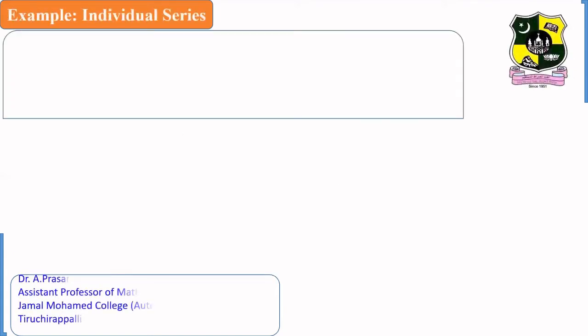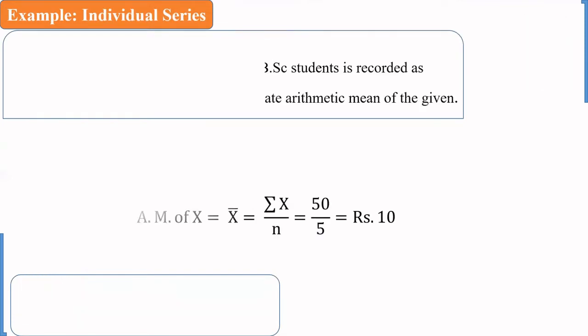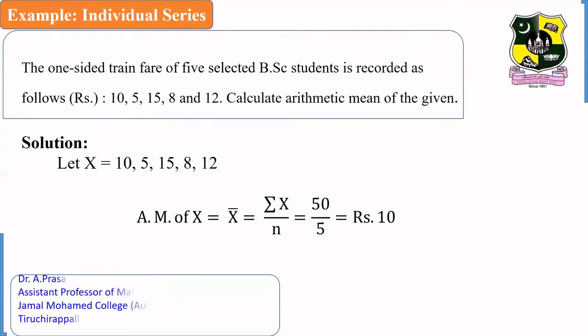I shall explain how to calculate the arithmetic mean for individual series. Here, the one-sided train fare of five selected B.Sc students is recorded as follows in rupees: 10, 5, 15, 8, and 12. Calculate arithmetic mean.